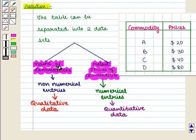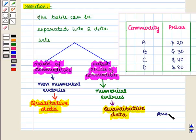Thus we have shown the name of the commodities as qualitative data and retail prices of the commodities as quantitative data. This is the required answer. This completes our session.